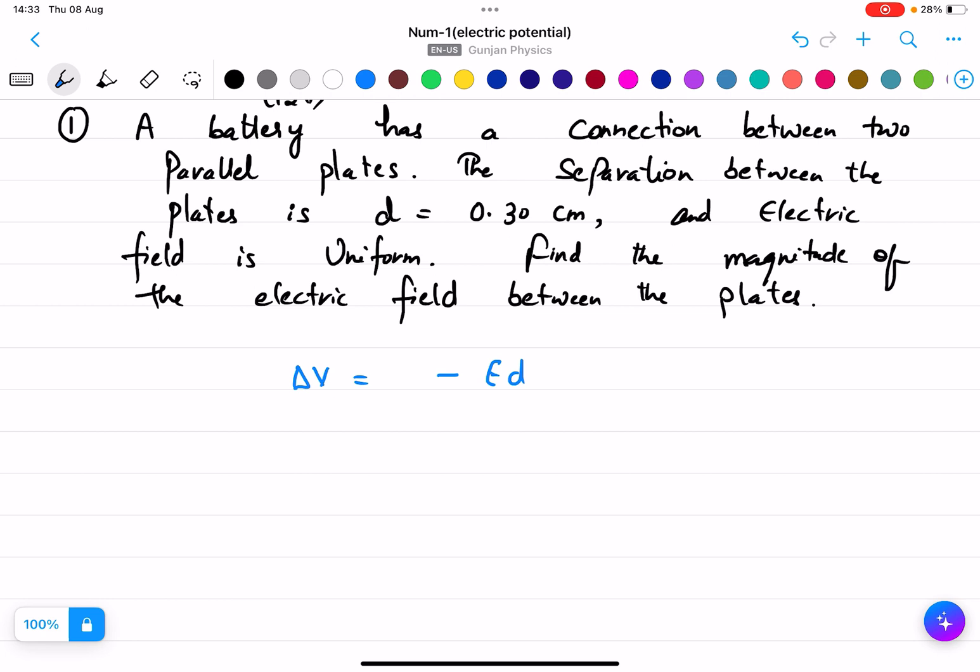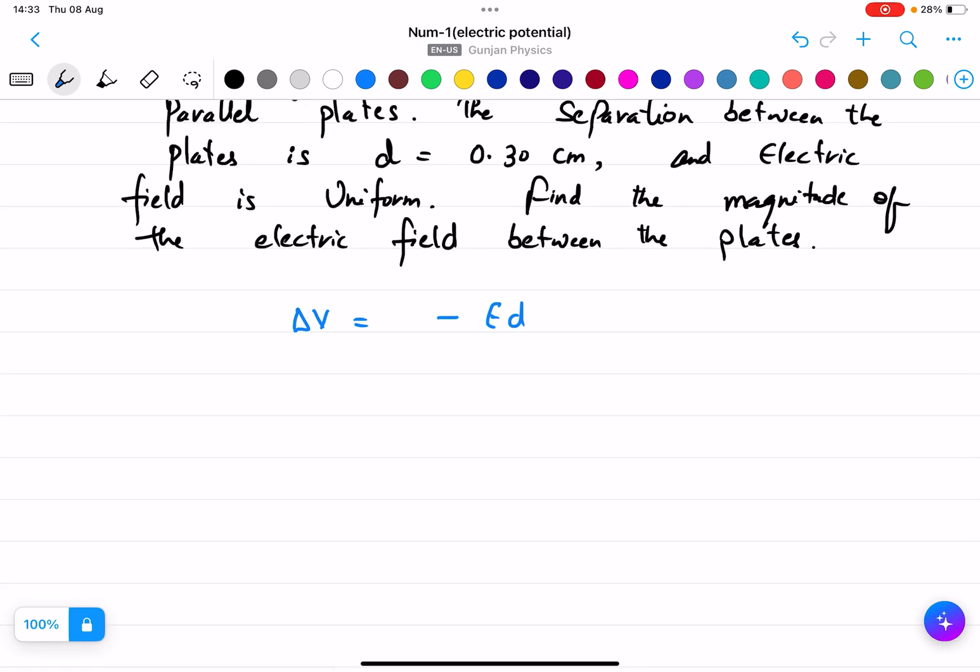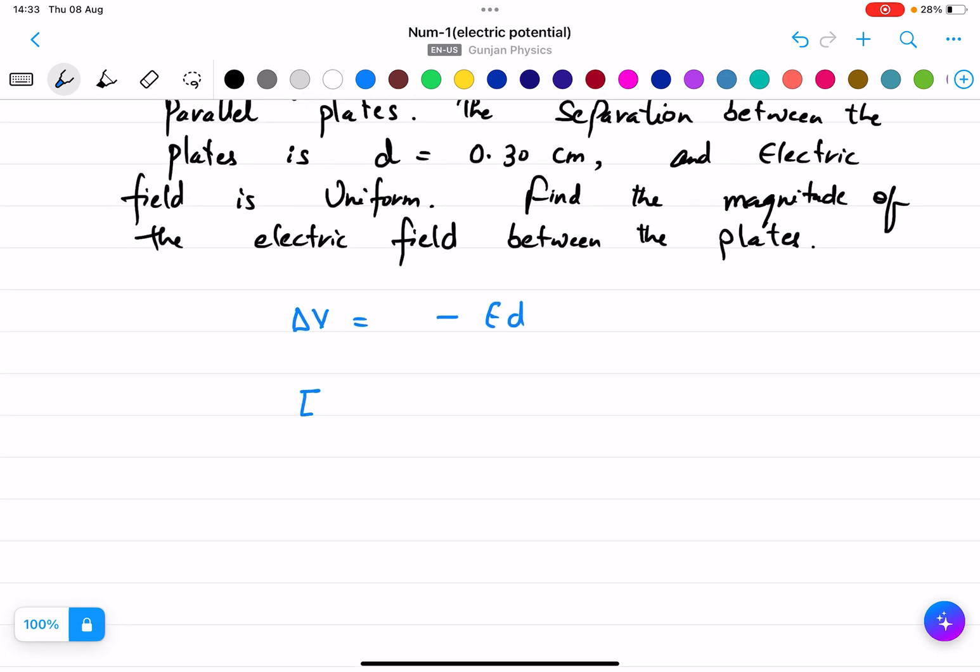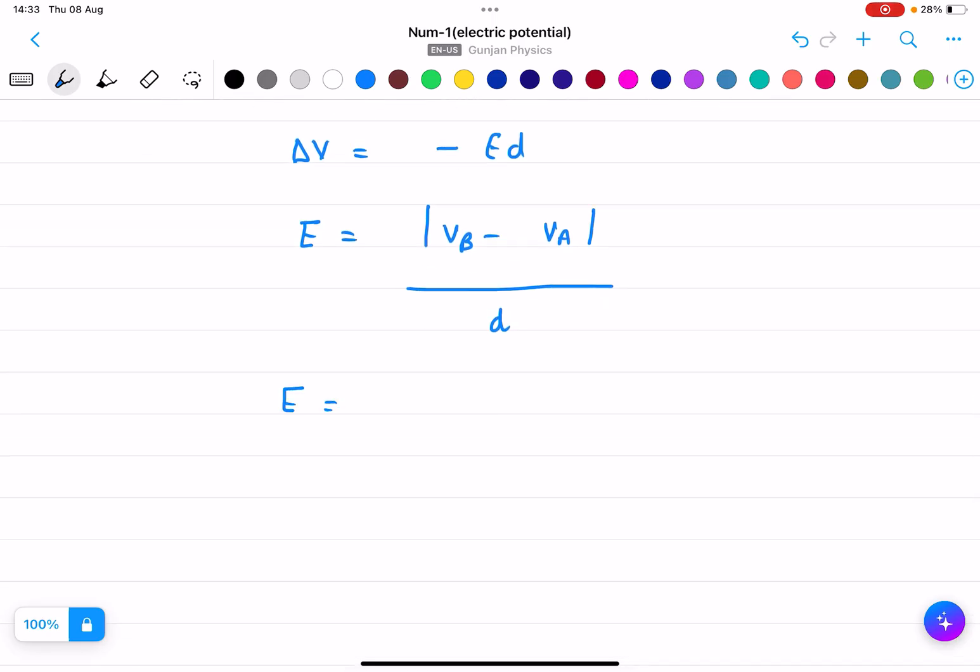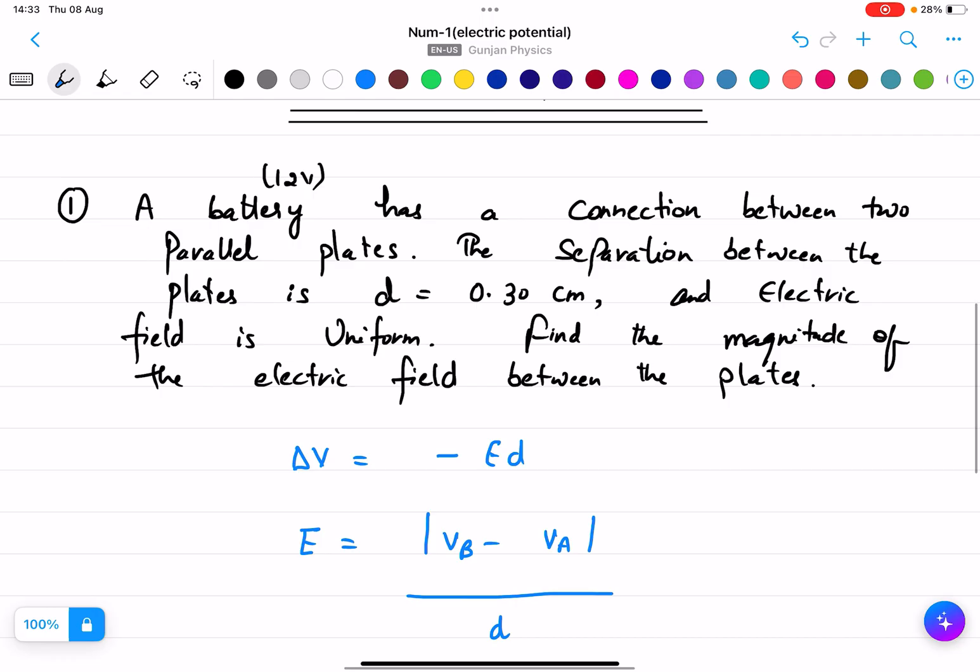We did it previously. And we know what is E - E is basically the difference of the two potentials over d. So E equals VB minus VA over d. So let us calculate.